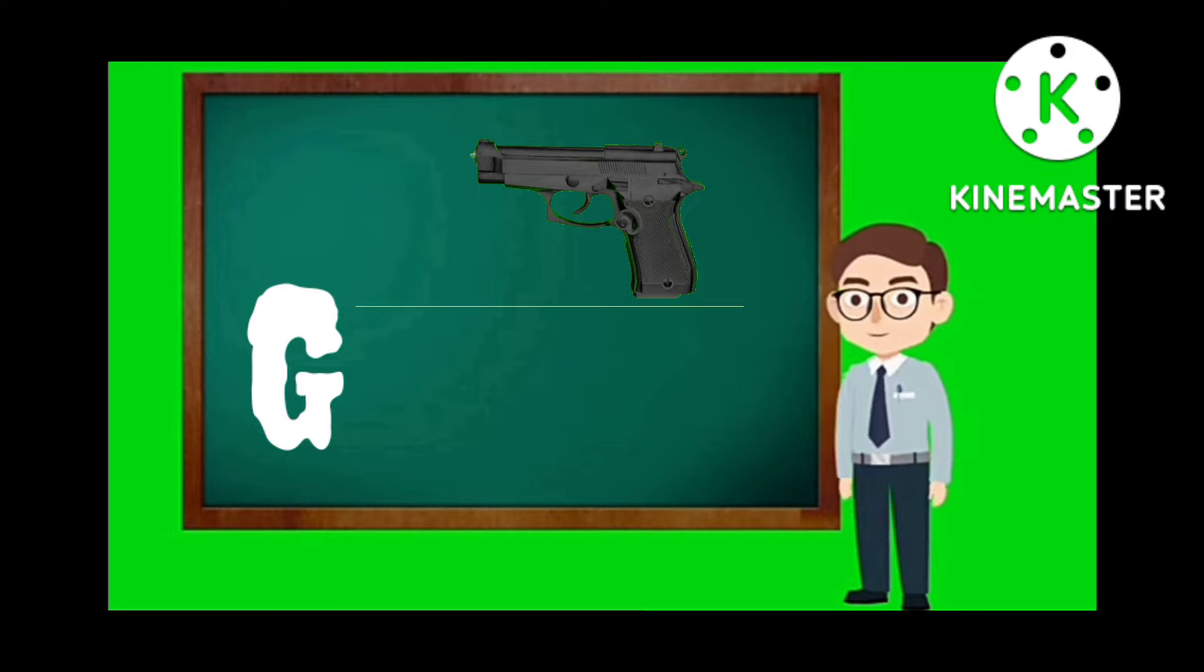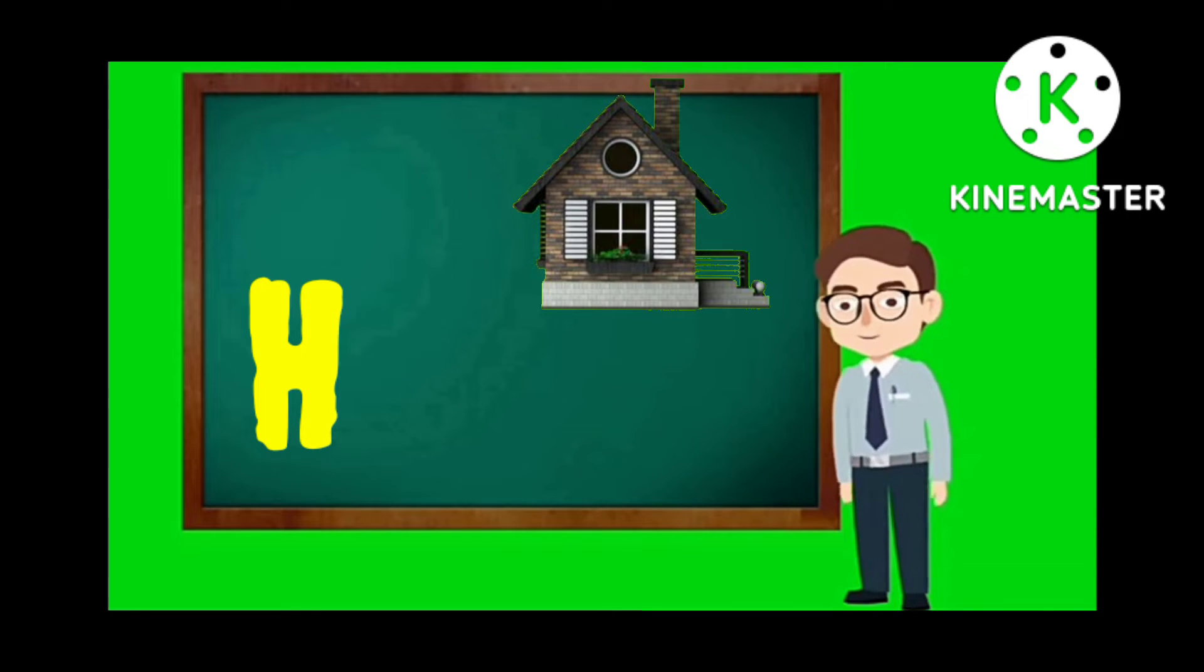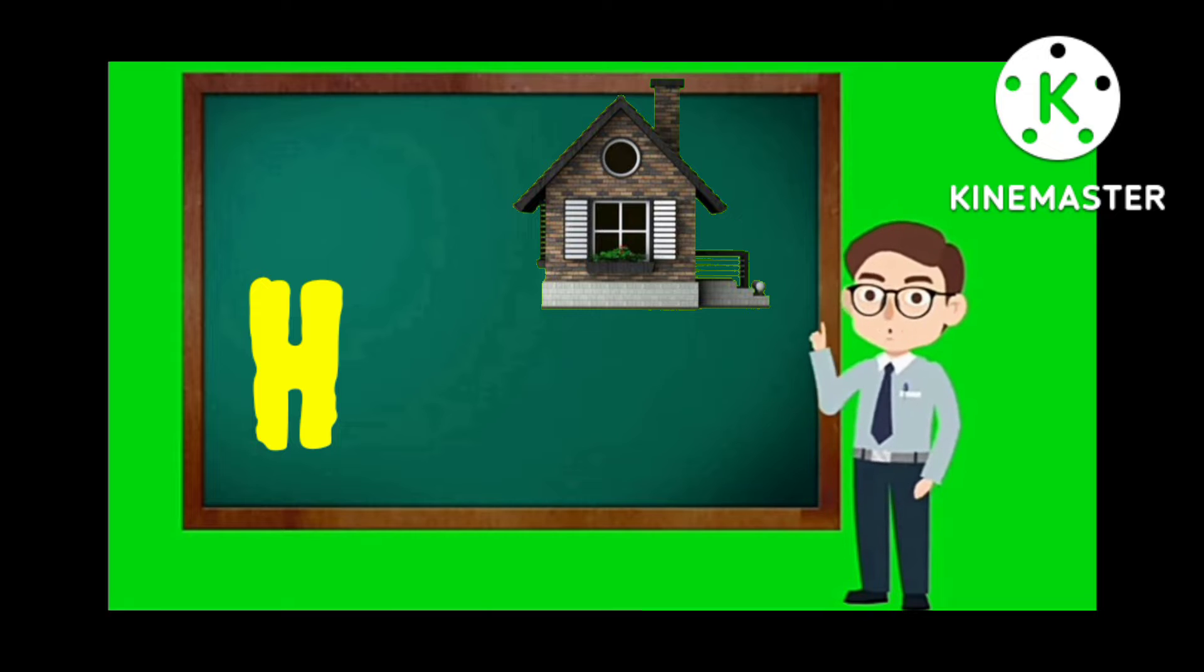J, jump up. K, lower kiss. L, kick your leg out like this.